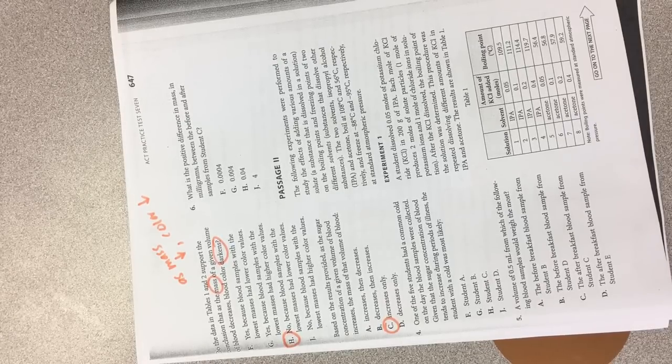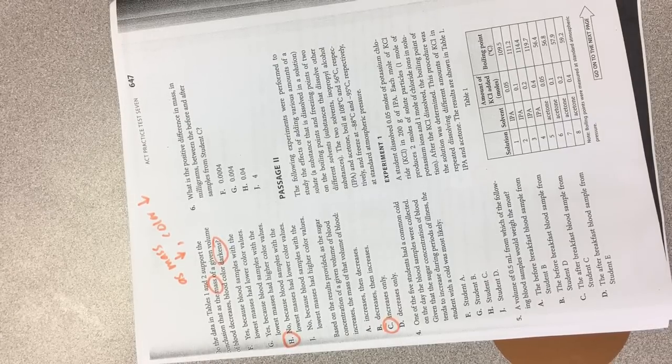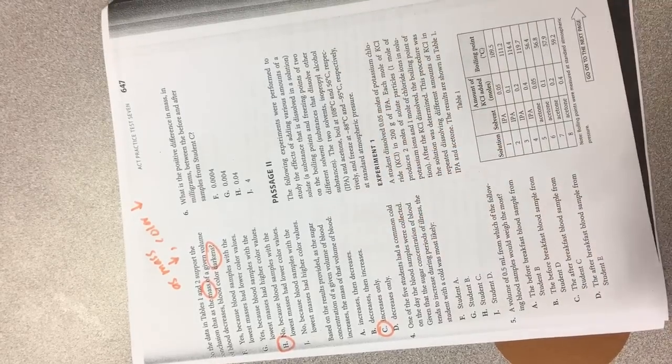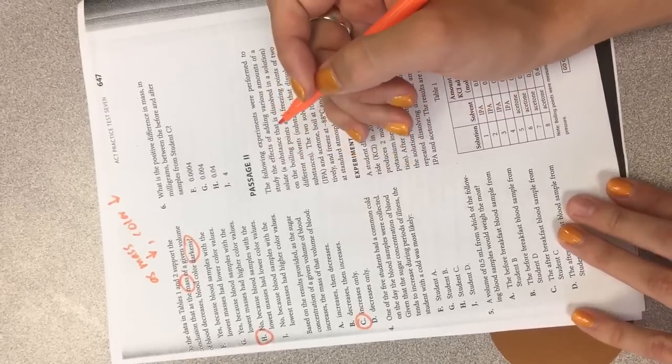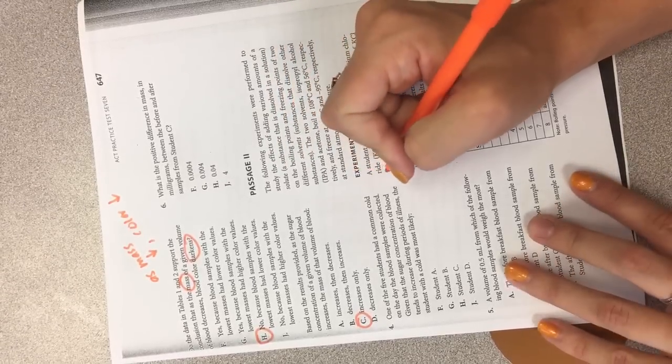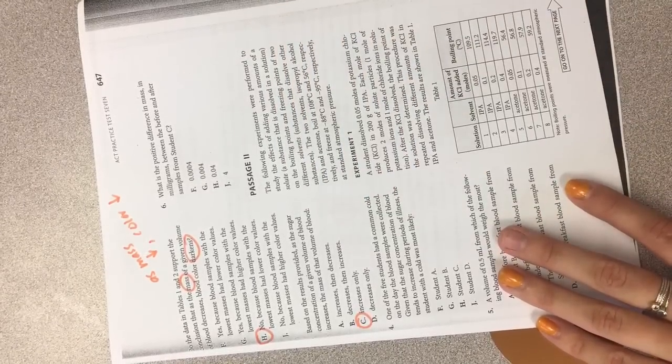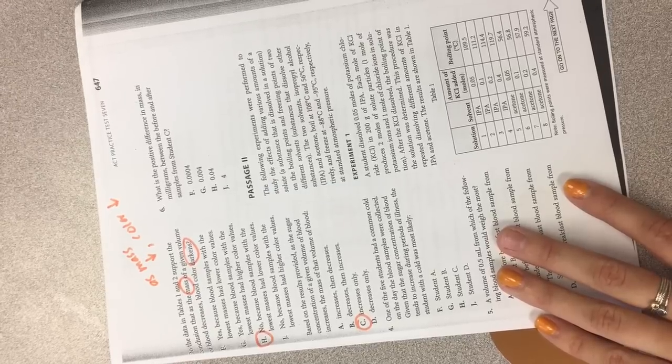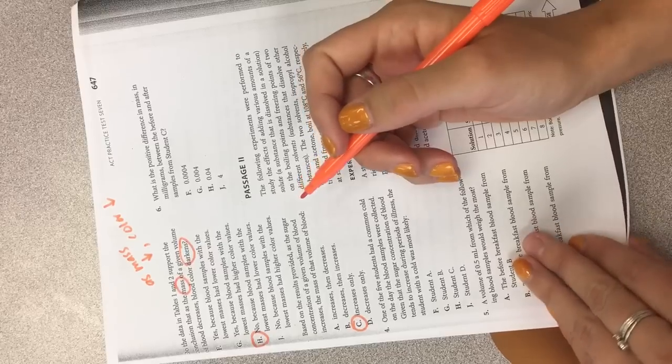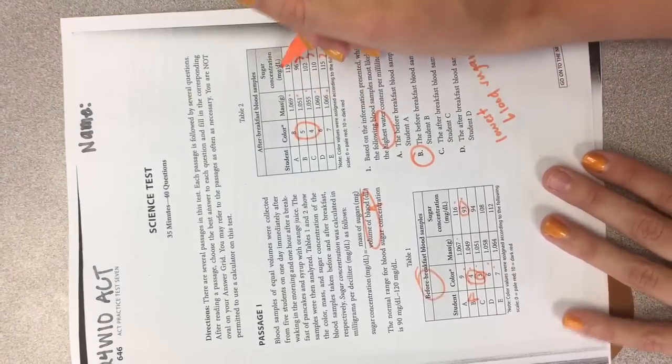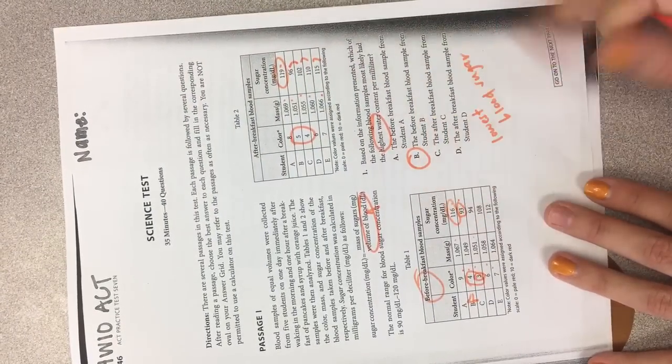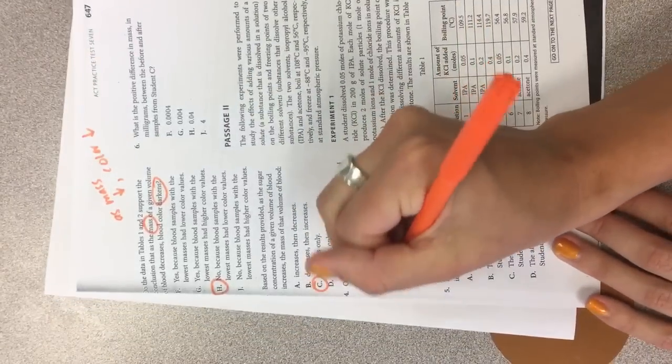Alright, number four. One of the five students had a common cold on the day of the blood samples were collected. Given that sugar concentration of blood tends to increase during periods of illness, the student with a cold was most likely. So one of the five students had a common cold on the day. So it increases during periods of illness. So we want to look for the person that has the highest blood sugar. 119, 116, so the person with a cold was most likely student A.